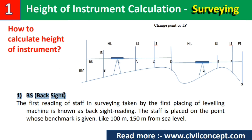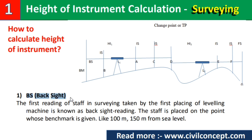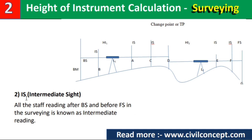The first term is backsight (BS). The first reading of the staff in surveying taken by the first placing of the leveling machine is known as backsight reading. When we look at the first reading of the staff, this is known as backsight. The staff is placed on the point where a benchmark is given, like 100 meters or 150 meters from sea level.